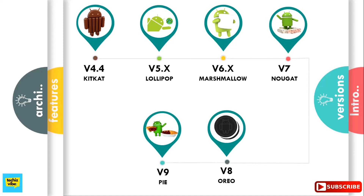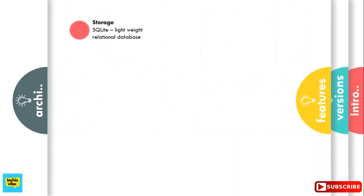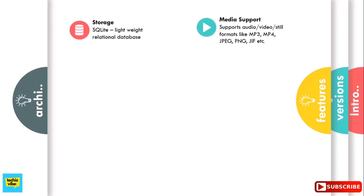Now let's go into the features of Android. Here I am describing some of the main features of Android. Data storage: SQLite, a lightweight relational database, is used for data storage purposes. Media support: Android supports audio, video, and still media formats like MP3, MP4, JPEG, PNG, GIF, etc.